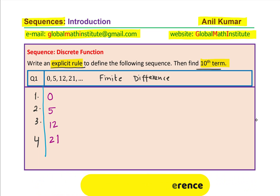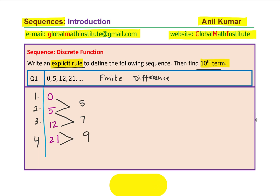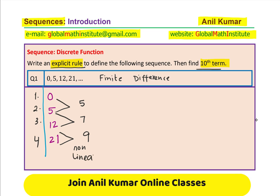The first finite difference is like y₂ minus y₁. So we do: 5 minus 0 is 5, 12 minus 5 is 7, and 21 minus 12 is 9. We see that this first finite difference is not constant, so that means it is nonlinear. Now let's go for the second finite difference: 7 minus 5 is 2, and 9 minus 7 is also 2. Since the second finite difference is constant, that means it is quadratic.